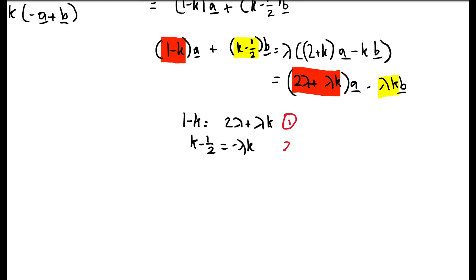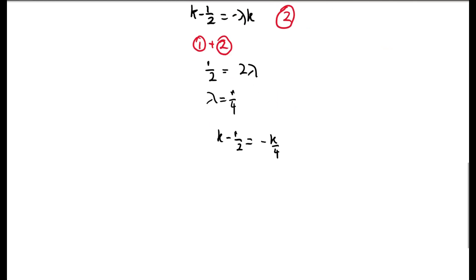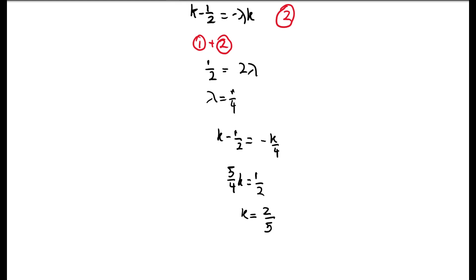Labelling these equations 1 and 2, and adding them, we get a half equals 2 lambda, so lambda equals a quarter. Substituting back into equation 2: K minus a half equals minus K over 4. Rearranging gives 5 over 4 K equals a half, so K equals 2 fifths.